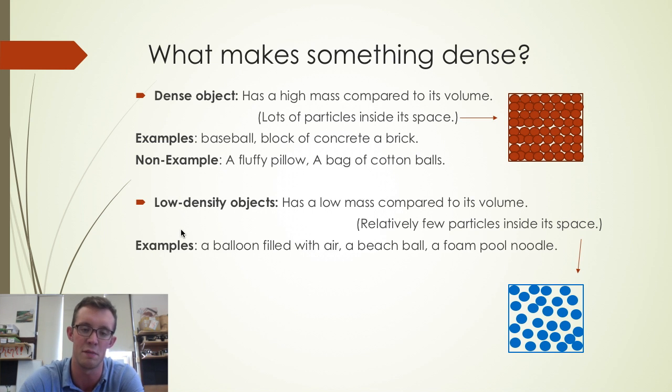Examples of low-density objects would be things like balloons filled with air, beach balls, or like the foam pool noodles that kids will play with at pools. Non-examples of a low-density object would be things that have again a lot of mass crammed into their volume, like a bag of pennies or a sack of rice or a cannonball.